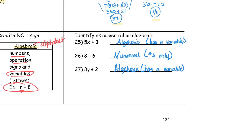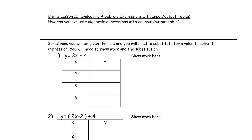Here are the answers for 25 through 27. Number 25 is algebraic — it has a variable. Number 26, numerical — numbers only. And number 27, algebraic — has a variable. Hope you did a great job. Now let's take a look at today's lesson.